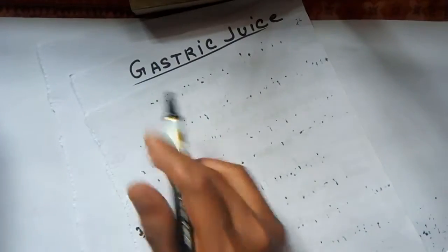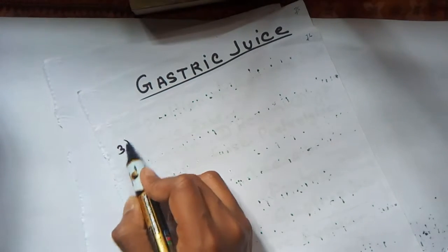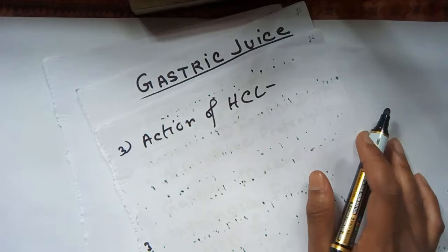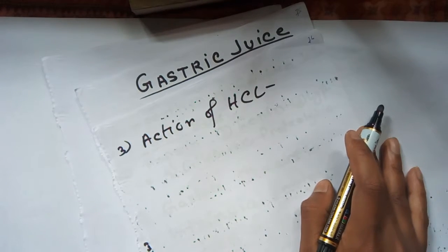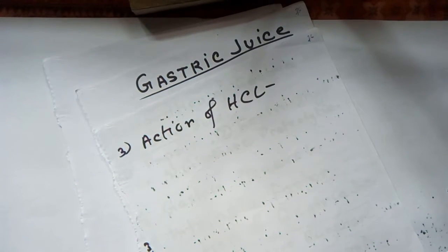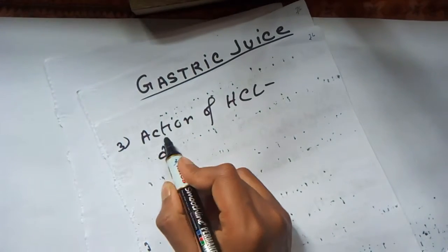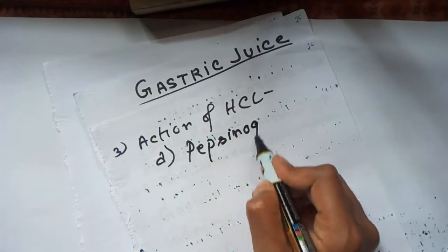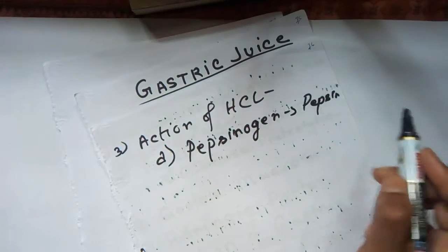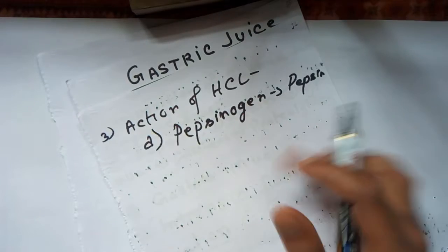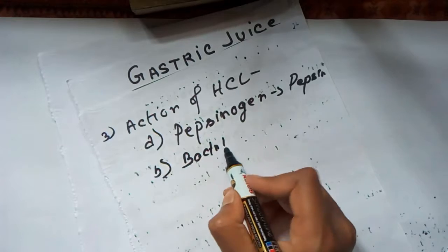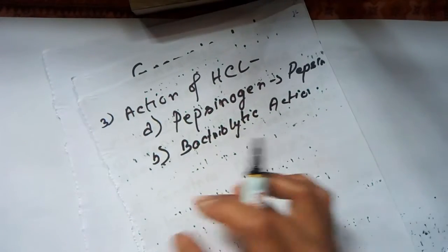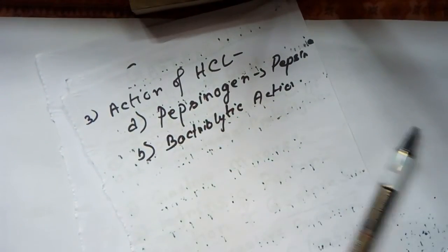Number four is the action of acid. The acid present in gastric juice has the following actions: it activates pepsinogen into pepsin, and it also has a bacteriolytic action which kills bacteria.